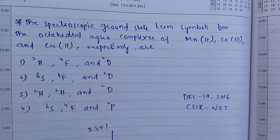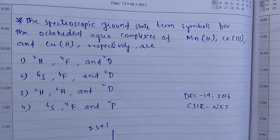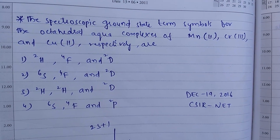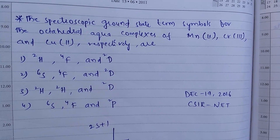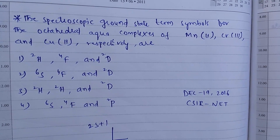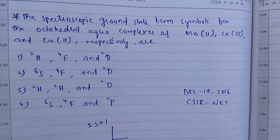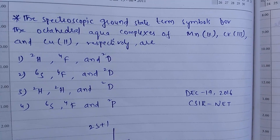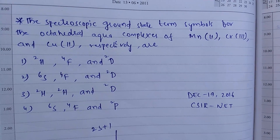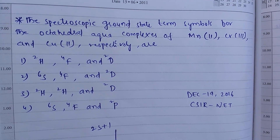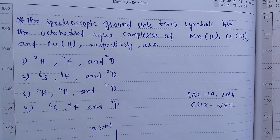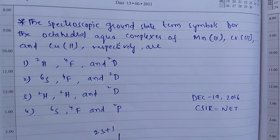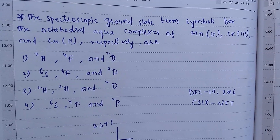Hi, this is Chiranjeevi. This question appeared in December 19, 2016 CSIR-NET. The spectroscopic ground state term symbols for the octahedral aqua complexes of Mn²⁺, Cr³⁺ and Cu²⁺ respectively are — okay, these are the options.